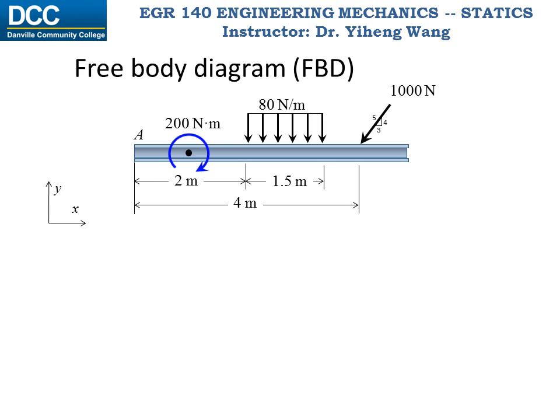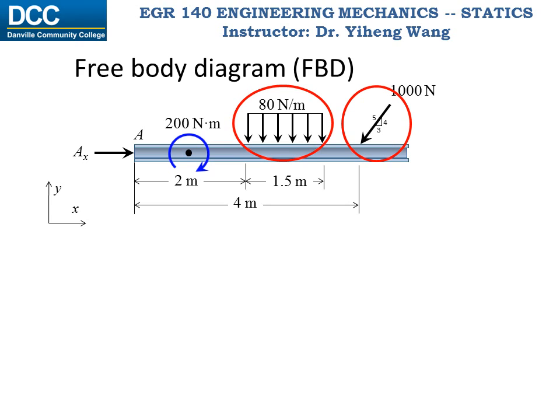First, we need to be clear that the body is in equilibrium — it is not moving; it is held static by the wall. Looking at the non-applied loadings on this member, we see there is a horizontal component of this force that will push the member to the left. Therefore, the wall must exert a horizontal force to the right to prevent this leftward motion. Because of the vertical component of this force as well as the distributed force causing the member to go down, the wall must exert a vertical force upward to prevent this downward motion.